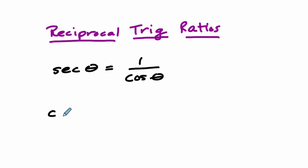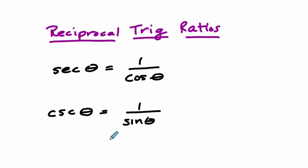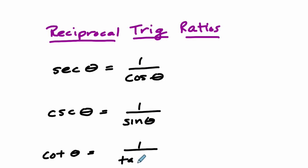Then we have the cosecant of theta — that's the reciprocal of the sine of theta. And finally, we have the cotangent of theta, which is the reciprocal of the tangent of theta. These are called the reciprocal trig identities because they are the reciprocals of sine, cosine, and tangent.